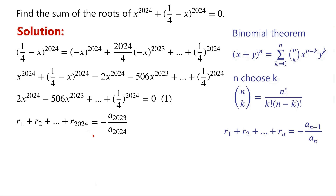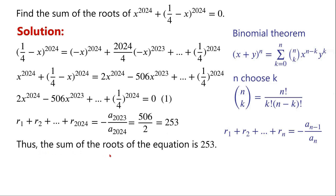So by Vieta's formulas, the sum of the roots equals minus a_2023 over a_2024, which equals 506 over 2, which is 253. Thus, the sum of the roots of the equation is 253.